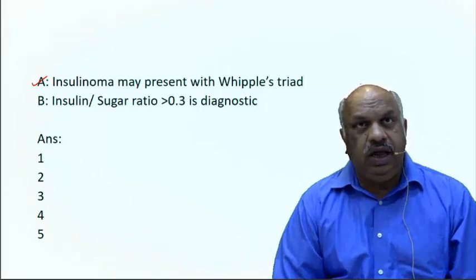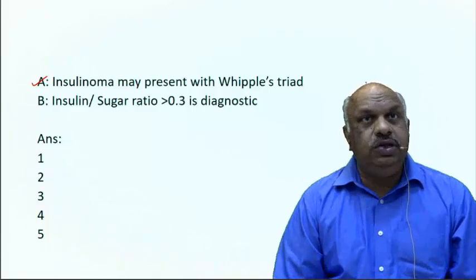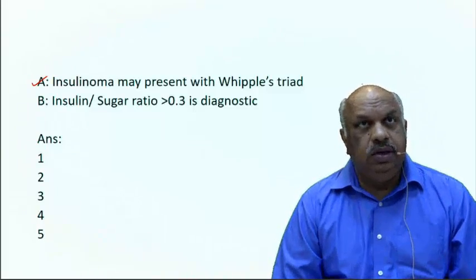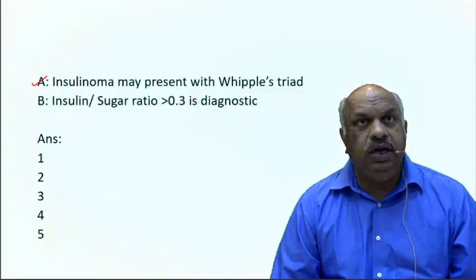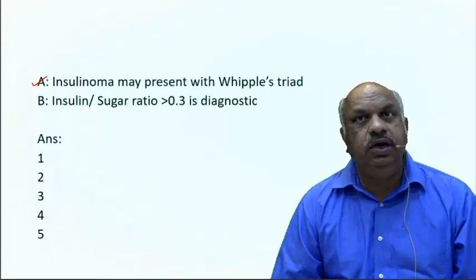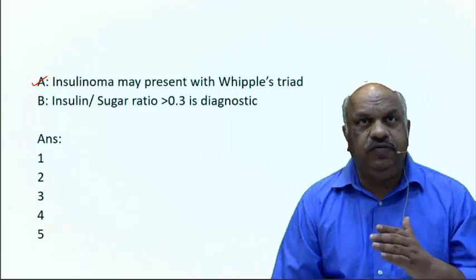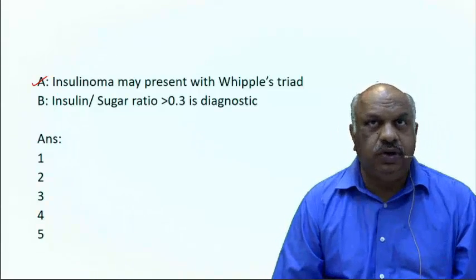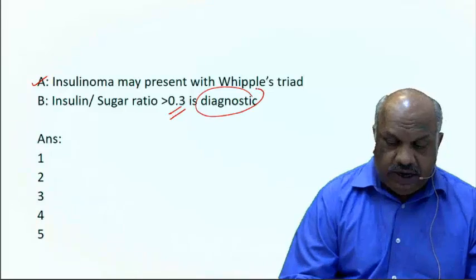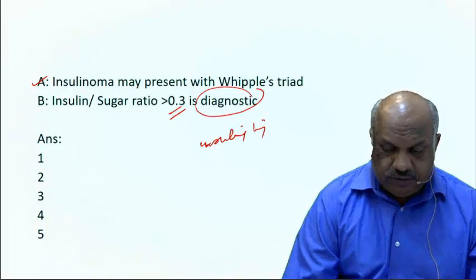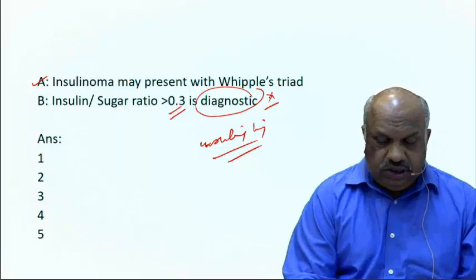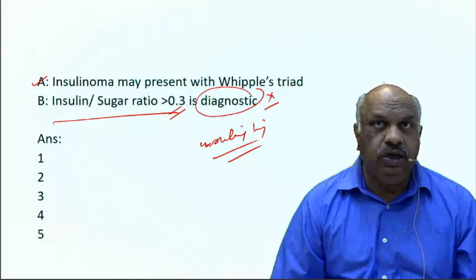Whipple's triad consists of: hypoglycemia (patient comes with a hypoglycemic attack), blood sugar less than 50 mg% at the time of attack, and relief upon giving glucose. The insulin-to-sugar ratio more than 0.3 is also correct as a statement, but it is not diagnostic because even insulin injection can produce this ratio. Therefore, statement B is incorrect as written.